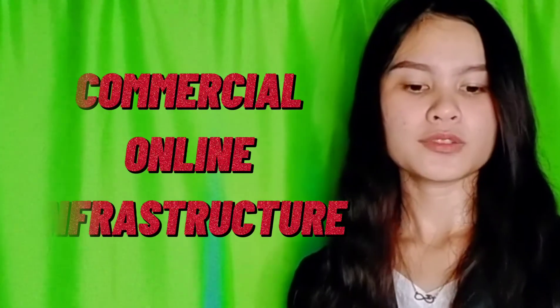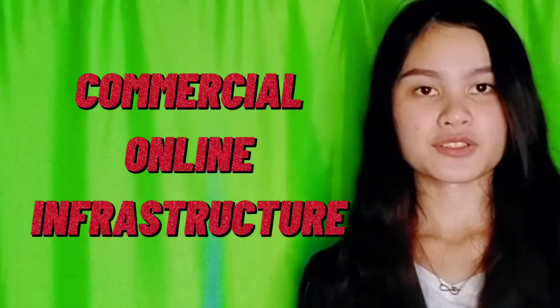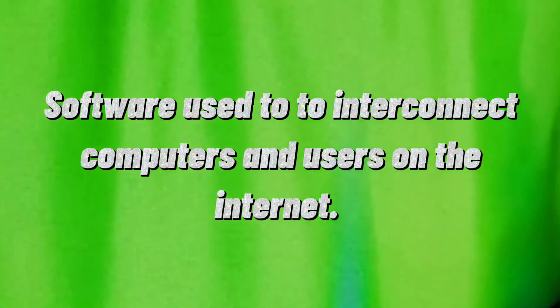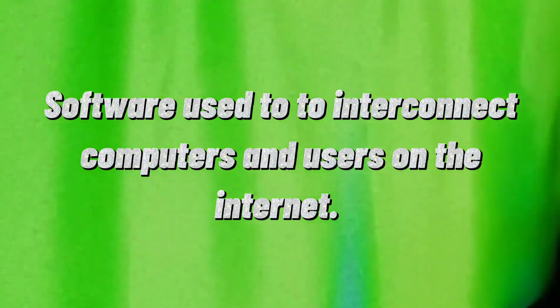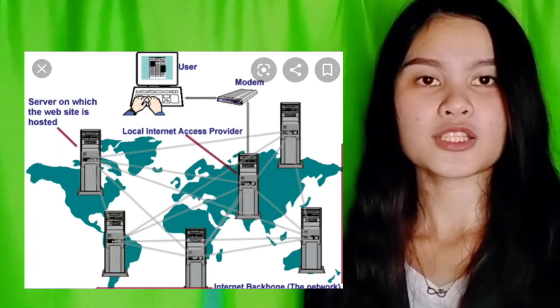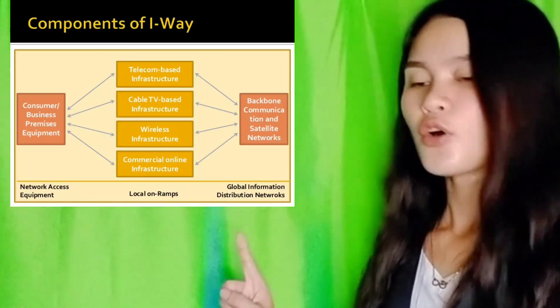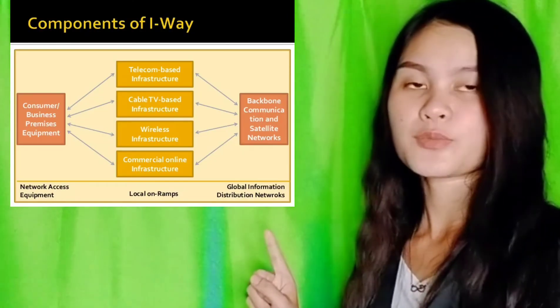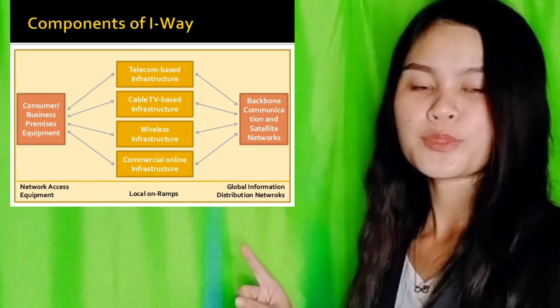Lastly is the commercial online infrastructure. Software used to interconnect computers and users on the internet. This includes internet servers and internet network equipment. In this corner, we can see the Global Information Distribution Networks, or the Backbone Communication and Satellite Networks. It is an infrastructure that connects countries and continents to the internet.